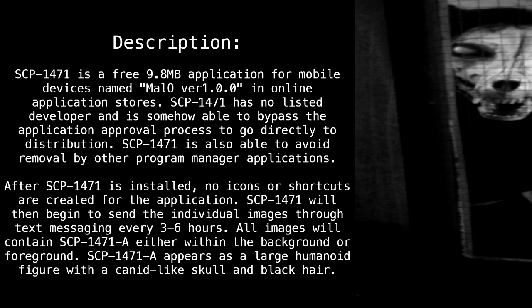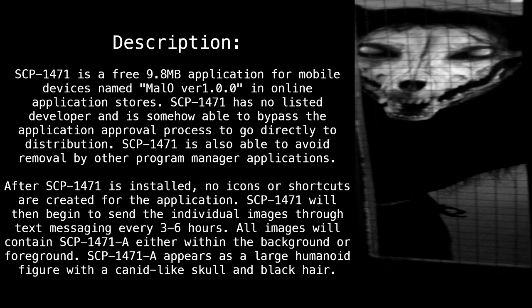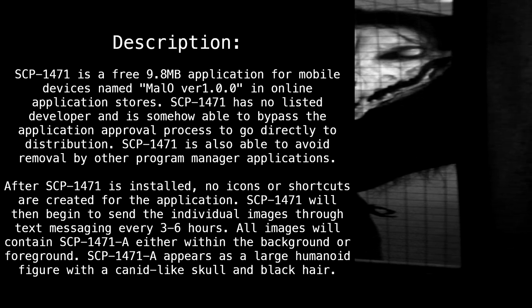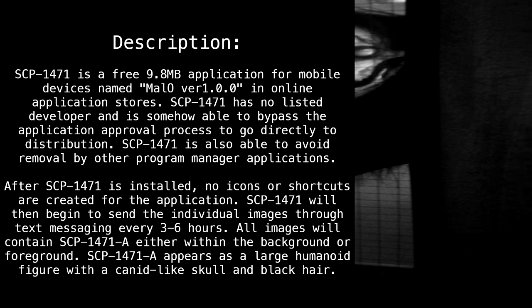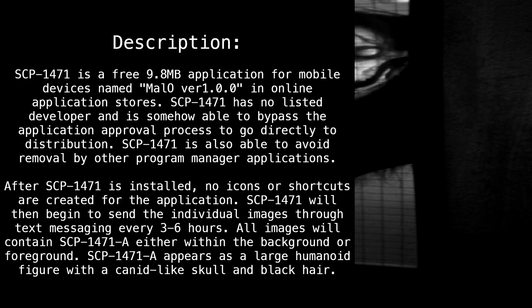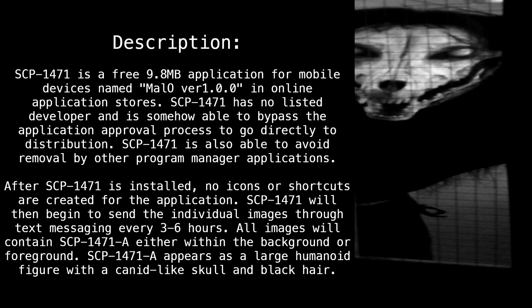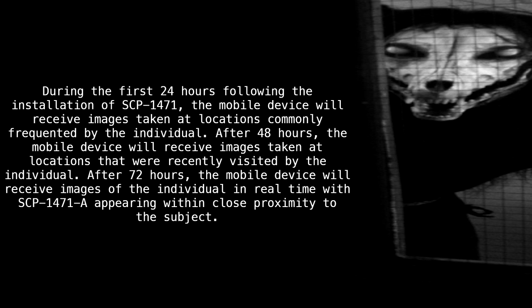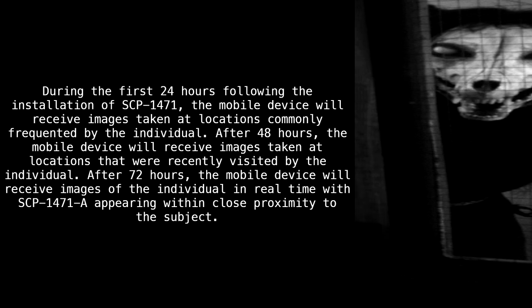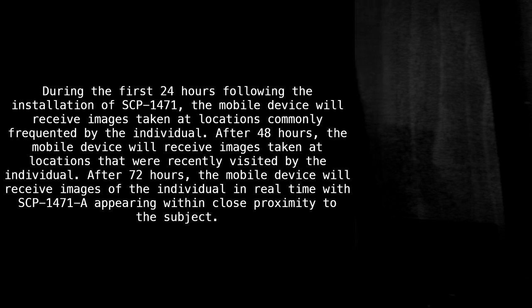SCP-1471 will then begin to send the individual images through text messaging every three to six hours. All images will contain SCP-1471-A either within the background or foreground. SCP-1471-A appears as a large humanoid figure with a canid-like skull and black hair. During the first 24 hours following the installation of SCP-1471, the mobile device will receive images taken at locations commonly frequented by the individual.